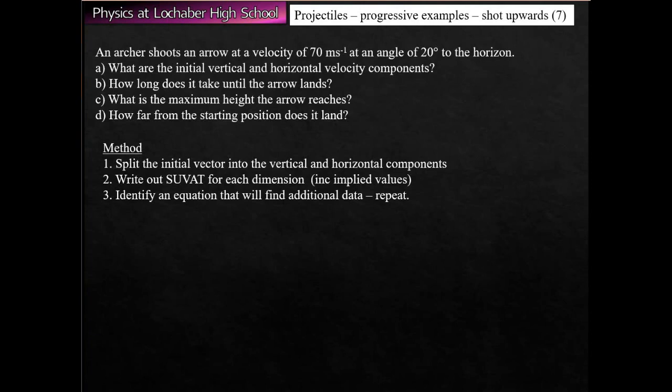A similar example shows an archer shooting at 70 m/s at 20 degrees to the horizon, with a similar set of questions. You might spot the pattern — there are only so many things you can be asked, and you're almost always following the same procedure: split the vector into its parts, write SUVAC for each dimension, figure out what you have and what you're missing, identify an equation linking them, and follow the usual rules of physics.